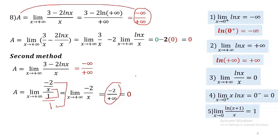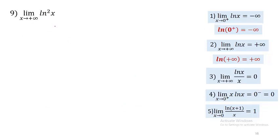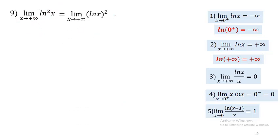Find the limit of (ln x)² as x tends to +∞. (ln x)² is just the square of ln x. When x tends to +∞, ln x tends to +∞, so (ln x)² = (+∞)² = +∞.